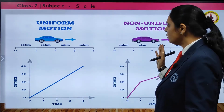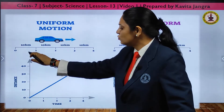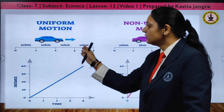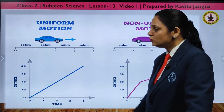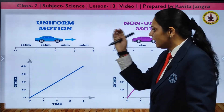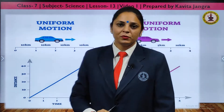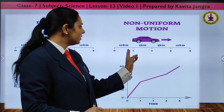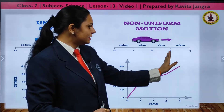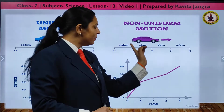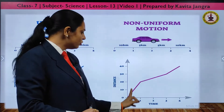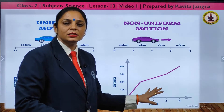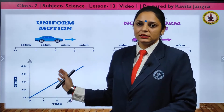In uniform motion, the vehicle covers 10 kilometers every one hour — equal distance in equal intervals — so the graph is a straight line. In non-uniform motion, the distance covered varies: for example, 10 km in the first hour, then 5 km, then 5 km in the next hours. The distance is not constant, so you get a curved graph. In uniform motion speed is constant; in non-uniform motion speed is not constant.